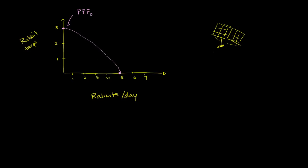If he just spent all his time hunting, he'd never get any rabbit traps and wouldn't be able to change the production possibilities frontier. But what if he decides he does want to build some rabbit traps? He decreases rabbits per day to four, which allows him to make one rabbit trap per day. So every day, on average, he catches four rabbits and builds one rabbit trap.